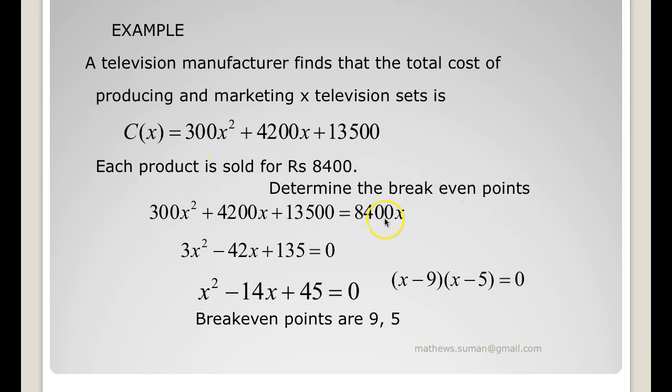At the breakeven point, C(x) equals R(x). So I have 300x squared plus 4200x plus 13500 equals 8400x. Dividing throughout by 100, you get 3x squared minus 42x plus 135 equals 0. Dividing by 3, you get x squared minus 14x plus 45 equals 0. Factorizing, you get (x - 9)(x - 5) equals 0. So your breakeven points are 9 and 5.